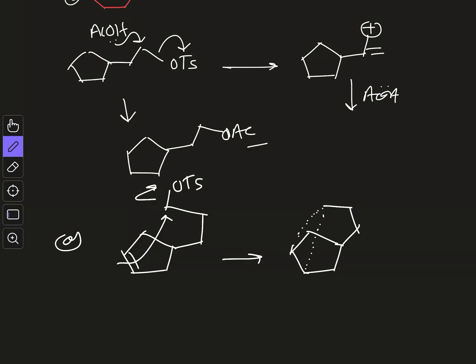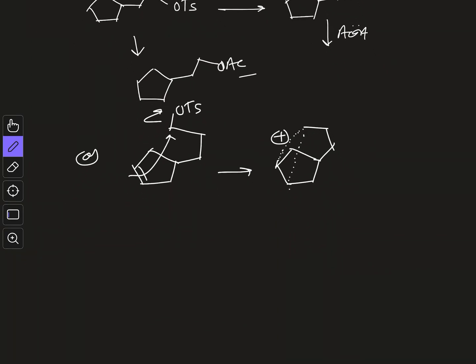The bridged carbocation intermediate is bonded to both this carbon center and that carbon center, giving a positive charge. If we rewrite it, the structure contains one, two, three — three carbon atoms in the bridged framework.